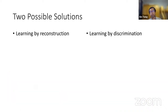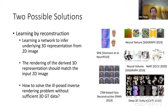To tackle this challenging problem, researchers have developed two groups of methods. The first group, learning by reconstruction, tries to regress 3D representations from 2D images so that rendered images of the learned 3D representation match the input real images. The key technical challenge is solving the ill-posed inverse rendering problem with limited labeled data, since ground truth 3D data is rarely available.